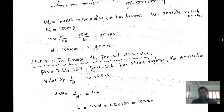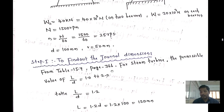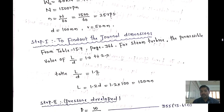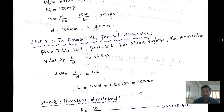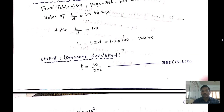In step one, we need to find the length of the journal bearing. Referring to table 15.7, page 366, for a steam turbine, the L/D ratio is 1 to 2. Taking the average, (1+2)/2 = 1.5, so L/D = 1.5. Wait — taking it as 1.2: L = 1.2 × D = 1.2 × 100 mm = 120 mm. The contact length of the bearing is 120 mm.